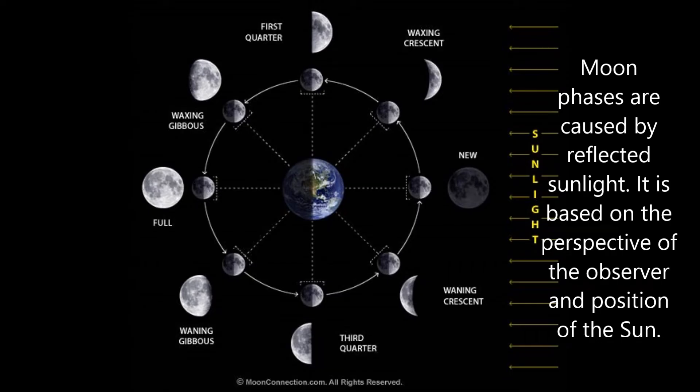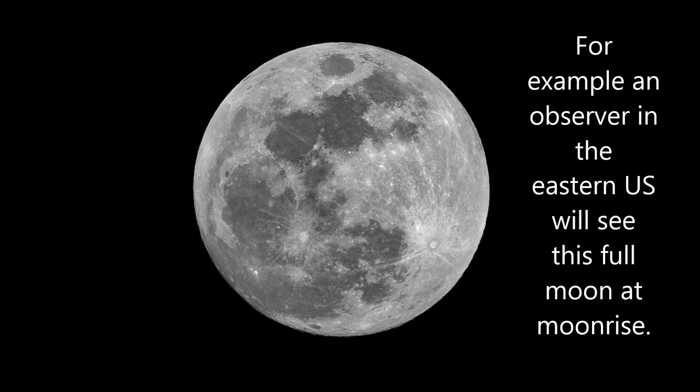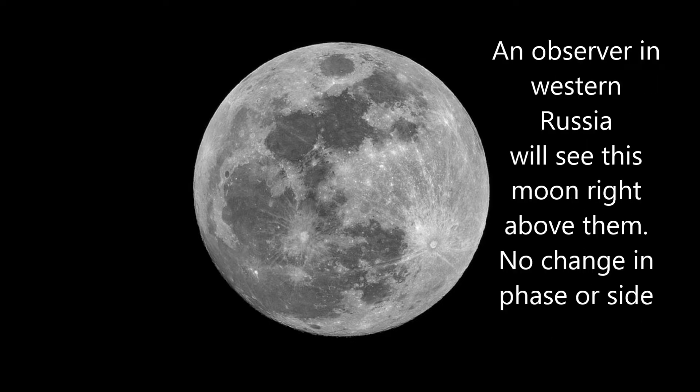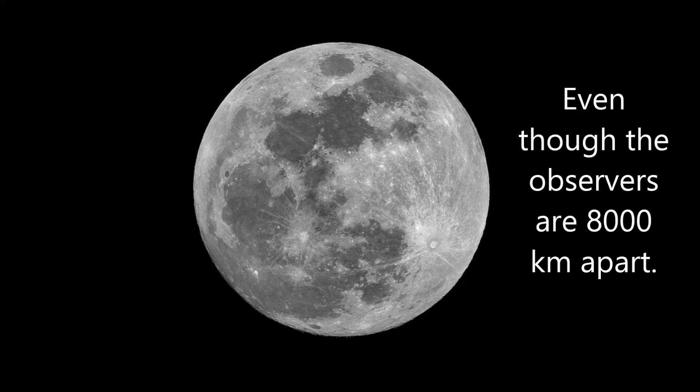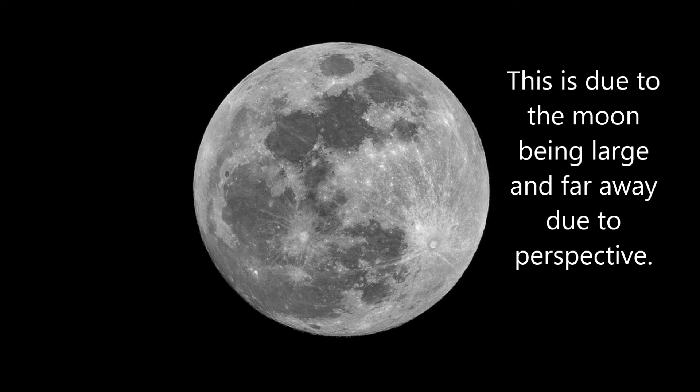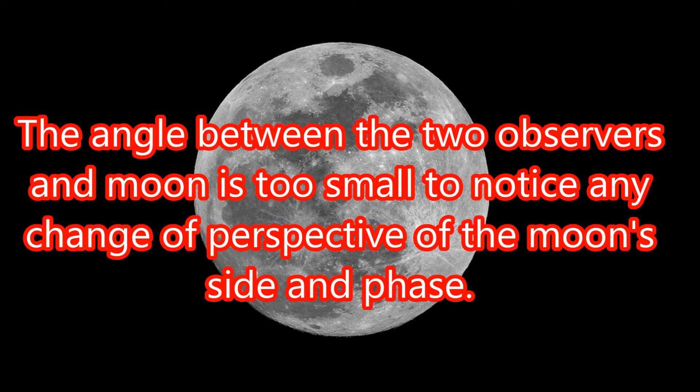Moon phases are caused by reflected sunlight. It is based on the perspective of the observer and the position of the sun. For example, an observer in the eastern US will see this full moon at sunrise. An observer in western Russia will see this moon right above them — no change in phase or side, even though the observers are 8,000 kilometers apart. This is due to the moon being large and far away. The angle between the two observers and the moon is too small to notice any change of perspective of the moon's side and face.